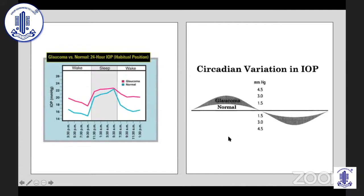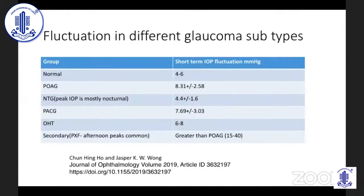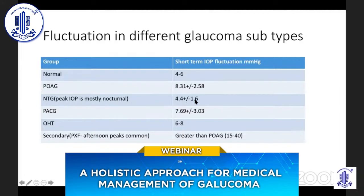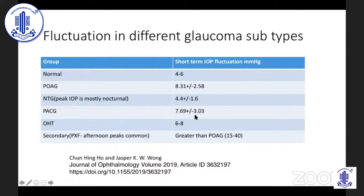The circadian variation in intraocular pressure over 24 hours for a normal individual can be up to 4, 5, or 6 millimeters. For a glaucoma patient, the circadian variation can be much higher. Looking at fluctuation across different glaucoma subtypes: in normals it is 4 to 6 mmHg; in glaucoma subjects it can be about 8.3 ± 2.5 mmHg. In normal tension glaucoma, the peak is mostly nocturnal. In PSEG, fluctuation is definitely higher. In ocular hypertension, fluctuation is also higher than normal. Very high peaks, especially in the afternoon, are notable in secondary glaucomas.